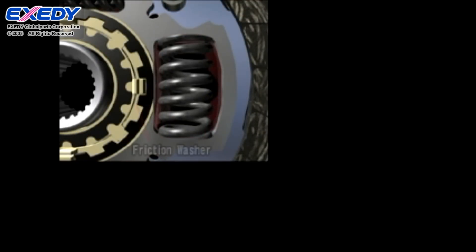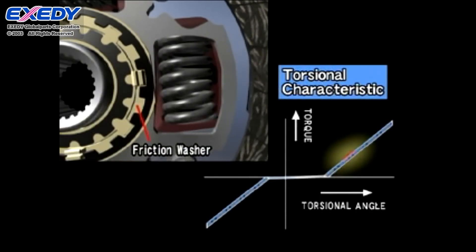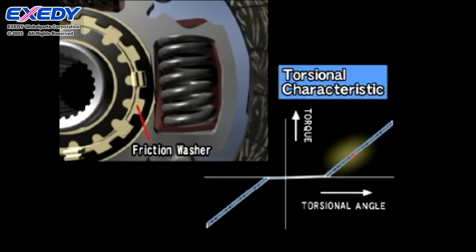When driving at a constant speed, fluctuations in engine revolution are absorbed by the torsion springs and friction washers. This reduces the amount of chattering noise transmitted to the transmission and the differential gear.